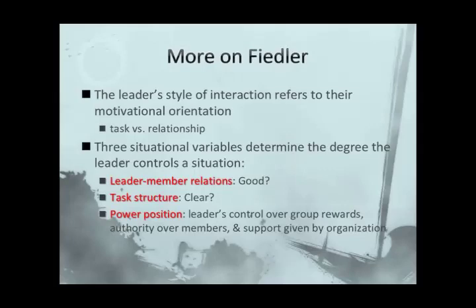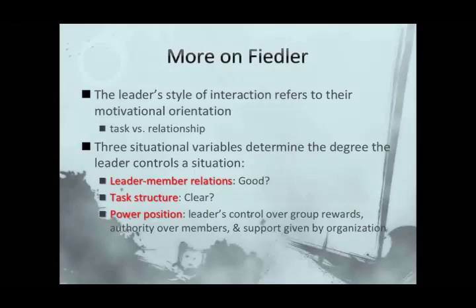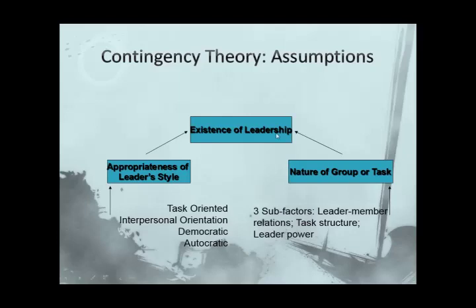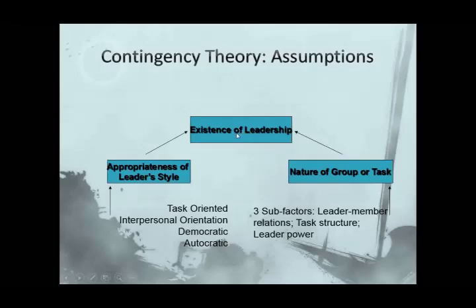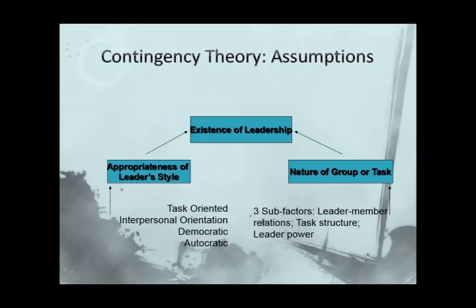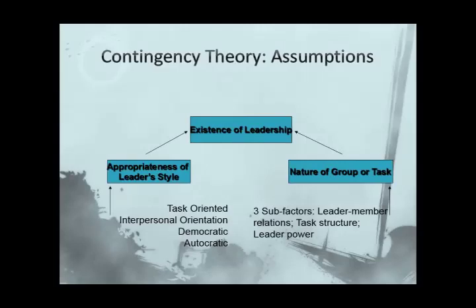Those situational variables state exactly what they sound like. Leader-member relations refers to the authority figure and subordinate — what's that relationship like? Task structure relates to goal attainment: how clearly delineated are the goals and the ways of producing work within your sport organization? Basically what contingency theory is saying is that good and proper leadership is going to be a combination of the nature of the group or task and the appropriateness of that leader's style. The style is contingent upon the nature of the task in terms of what works best — sometimes you need to be much more task oriented, or democratic, or autocratic.